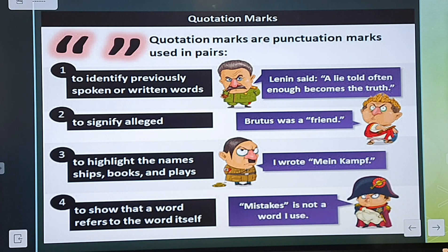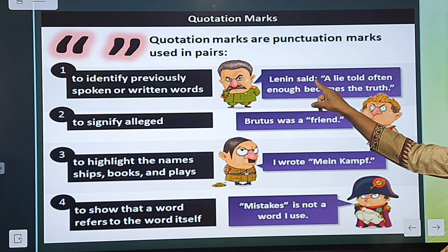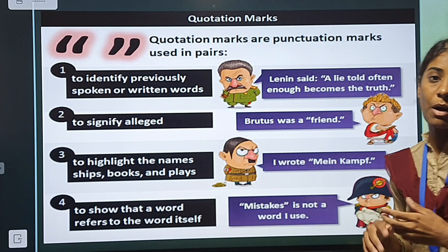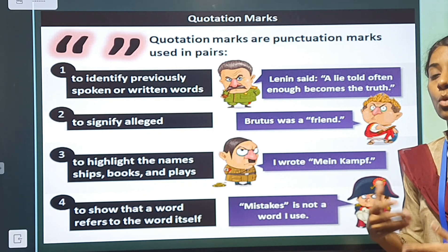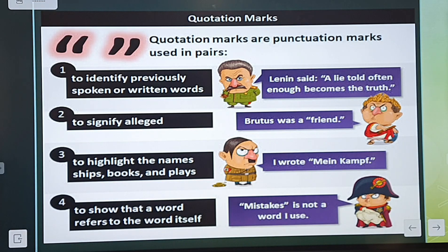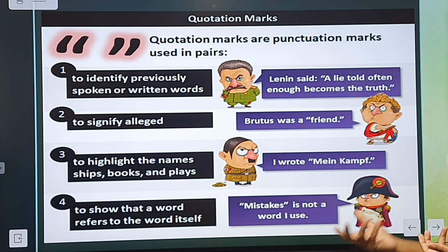For example, Lenin said: 'A lie told often enough becomes the truth.' After what Lenin said, a colon is also placed there. Quotation marks are also used to signify an accused or notable person — for example, 'Brutus was a friend.' They are also used to highlight names of ships, books, and plays — for example, I wrote 'Main Camp.'